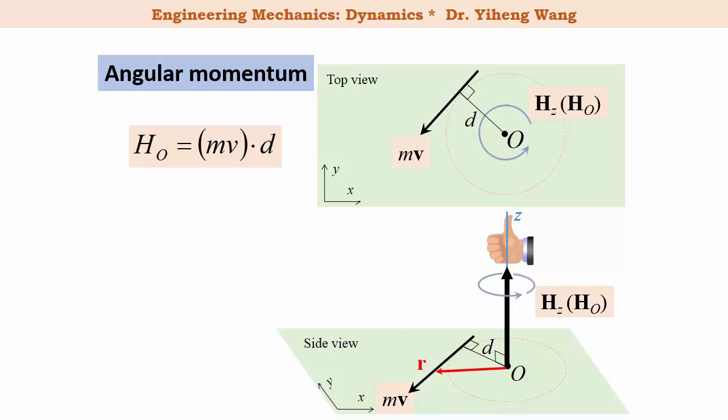In vector formulation, the angular momentum is calculated by the cross product of position vector r and the linear momentum vector. r again starts from the reference point O and it can end anywhere along the velocity vector.